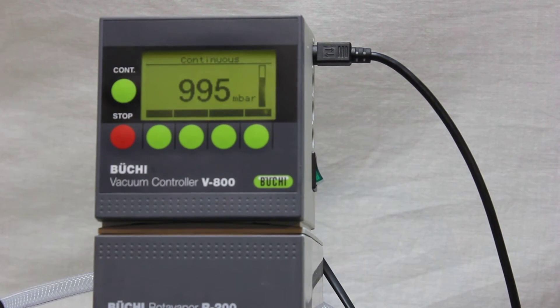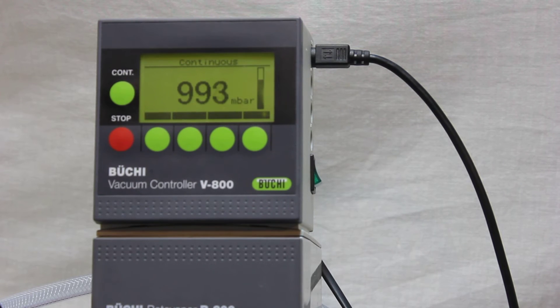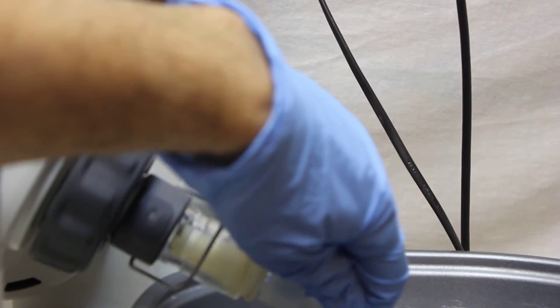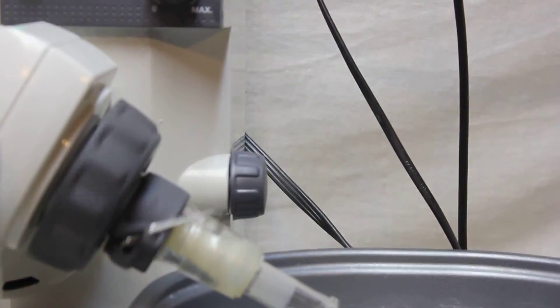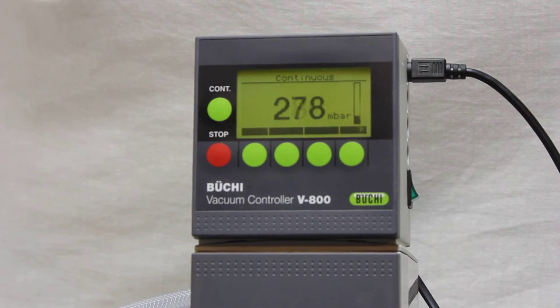When we turn on the vacuum pump, nothing is going to happen since it's missing the flask. I'm just going to use this stopper to close this area. Now immediately it starts going down.